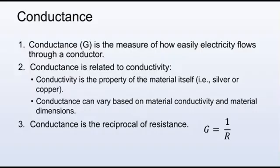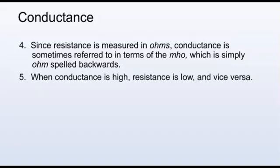Conductance, indicated by the letter G, is the measure of how easily electricity flows through a conductor. Conductance is related to conductivity. Conductivity is the property of the material itself, such as silver or copper. Conductance can vary based on material conductivity and material dimensions. Conductance is the reciprocal of resistance. Since resistance is measured in ohms, conductance is sometimes referred to in terms of the mho, which is simply ohm spelled backwards. When conductance is high, resistance is low, and vice versa.